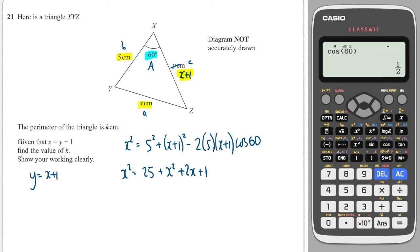I know that cosine of 60 is a half. So I'm timesing by a half and I'm timesing by 2, so they will cancel. So this leaves me with minus 5 times x plus 1. And minus 5 times x plus 1 is minus 5x minus 5.